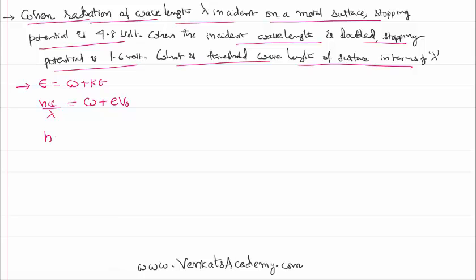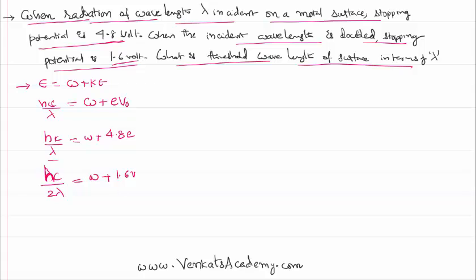In the first case: hc/lambda = work function + e(4.8). In the second case, when the wavelength is doubled, we write hc/(2*lambda). Since the metal is the same, the work function remains the same, but the stopping potential given in the problem is 1.6 volts. We then proceed by subtracting these two equations.